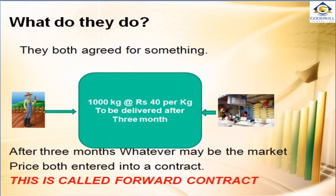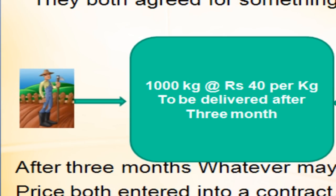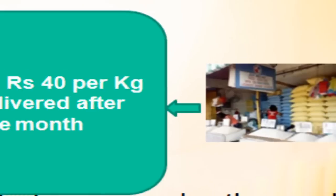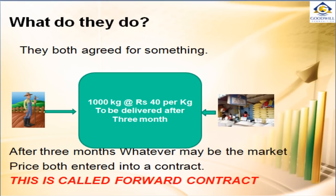What do they do in order to minimize their risk in price variation? They both agree on something. The farmer agrees to sell 1000 kg of rice at Rs 40 per kg today, to be delivered after 3 months, whatever may be the market price. Both the farmer and the distributor or manufacturer enter into a contract to fix the price risk. This is called a forward contract.